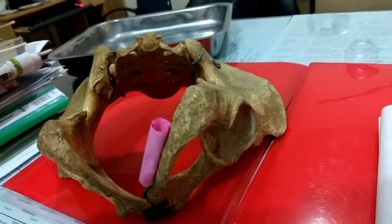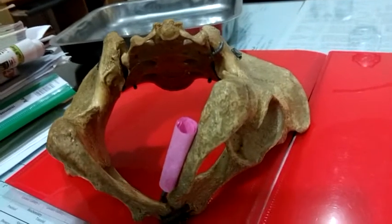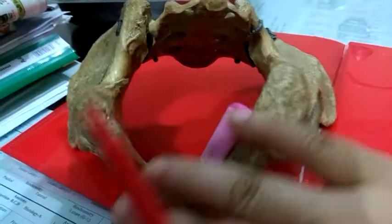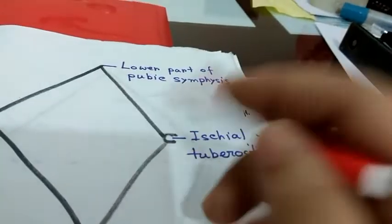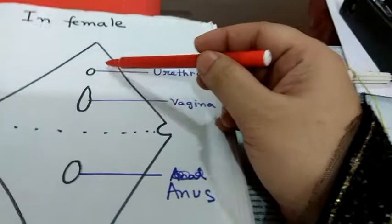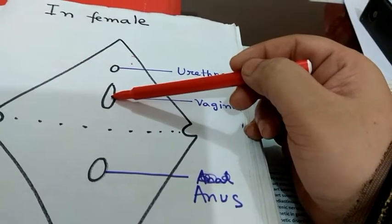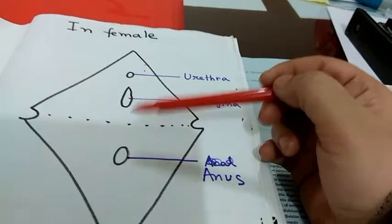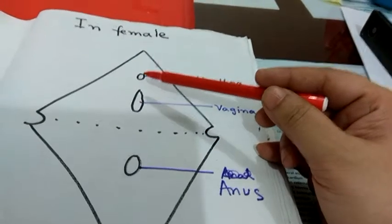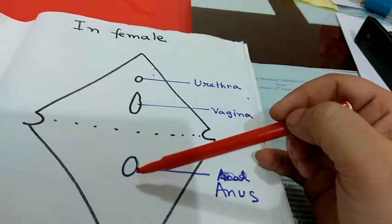Before discussing the branches, here is a short review of the perineum. The perineum is a diamond-shaped space corresponding to the pelvic outlet, covered by soft tissue and muscles. Drawing a line joining the two ischial spines divides it into the urogenital triangle anteriorly and the anal triangle posteriorly. In females, the urogenital triangle contains the urethral and vaginal orifices; in males, only the urethral orifice. The anal triangle contains the anal orifice.